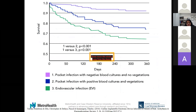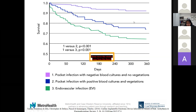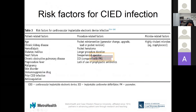Outcome data shows that patients with localized pocket infection and negative blood cultures and TEE have over 90% one-year survival. Those with pocket infection plus positive blood cultures or vegetation have over 70% one-year survival. However, patients with positive blood cultures alone — without localized pocket infection — have just over 60% one-year survival. Risk factors for infection include patient-related, procedure-related, and microbe-related factors. Infection risk over one year is traditionally 0.5–2% for new implantations and 1–7% for secondary interventions such as generator changes, lead repositioning, or upgrades.